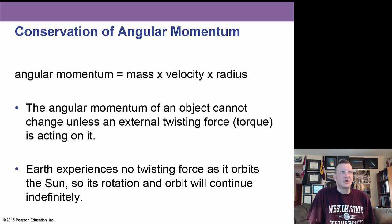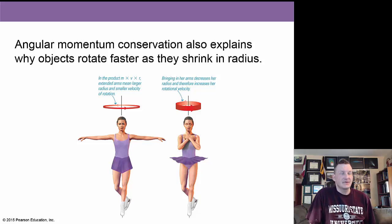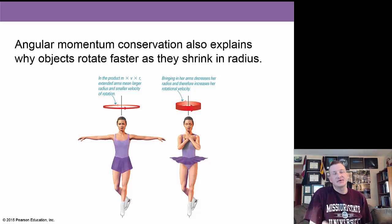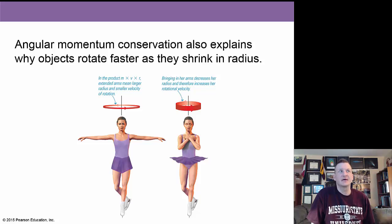Objects can conserve angular momentum. The angular momentum of an object cannot change unless an external twisting force — called torque — acts upon it. The Earth experiences no twisting force as it orbits the Sun, so its rotation and orbit will continue indefinitely. The classic example is an ice skater who pulls her arms in to rotate faster — her angular momentum is closer to her torso, so she rotates faster as the radius shortens.